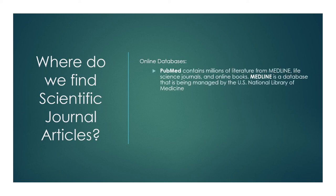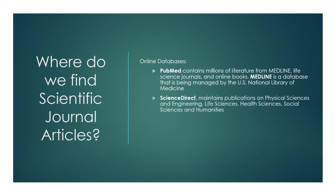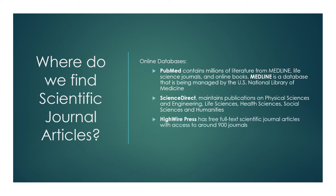PubMed is a repository of millions of references mostly about life sciences. Science Direct, on the other hand, has journals focused on a wide range of materials like physical sciences and engineering, life sciences, health sciences, social sciences, and humanities. High Wire Press has free full-text scientific journal articles with access to around 800 journals.